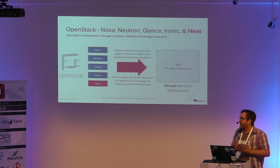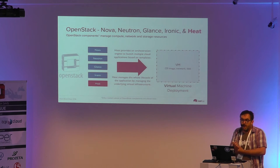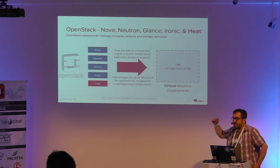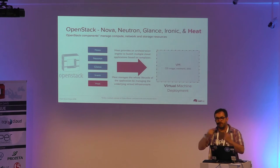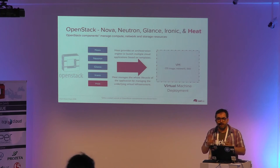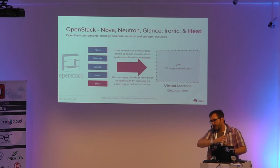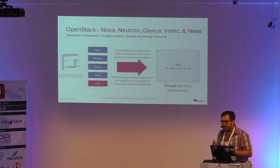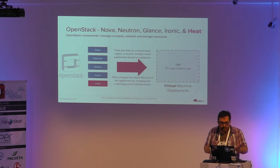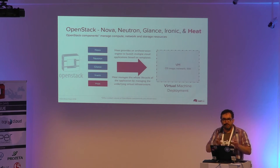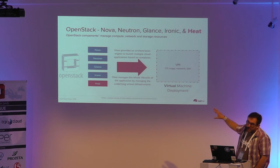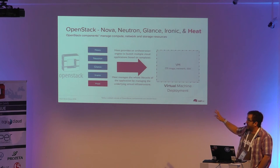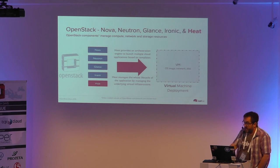When you've got a multi-tier application with a database back-end, an application server, and a web front-end where they need to be able to scale with each other, Heat allows you to define that collection of machines as a single entity and deploy it. Heat also has features for scaling out and fixing multi-application deployments when they go wrong. All of these — Nova, Neutron, Glance, Heat — are core OpenStack components used in an awful lot, if not every case, where people are deploying workloads in the cloud.